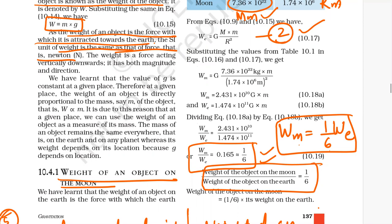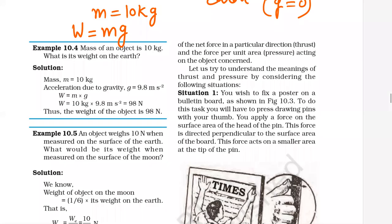Mass of an object is 10 kg and we have to find weight. W equals m into g — m is 10 and g is 9.8 — so weight will be 98 Newton.